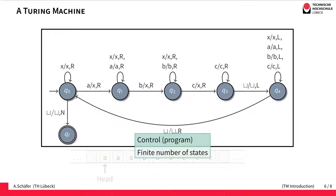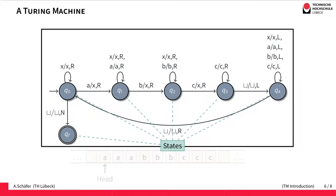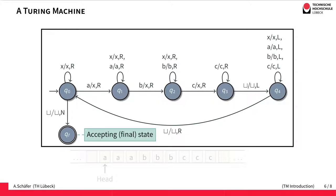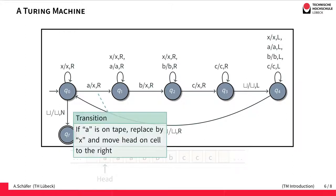Apart from the storage on the infinite tape, we have a finite control, which is similar to the deterministic finite automata. We have a finite number of states, one initial state, and one or more accepting states — also sometimes called final states. As a convention, we will not allow outgoing transitions from our accepting states. Between two states we might have transitions. For example, if we have an A on the tape, the transition is enabled; the A is replaced by X, the head moves to the right, and the state changes from Q0 to Q1.